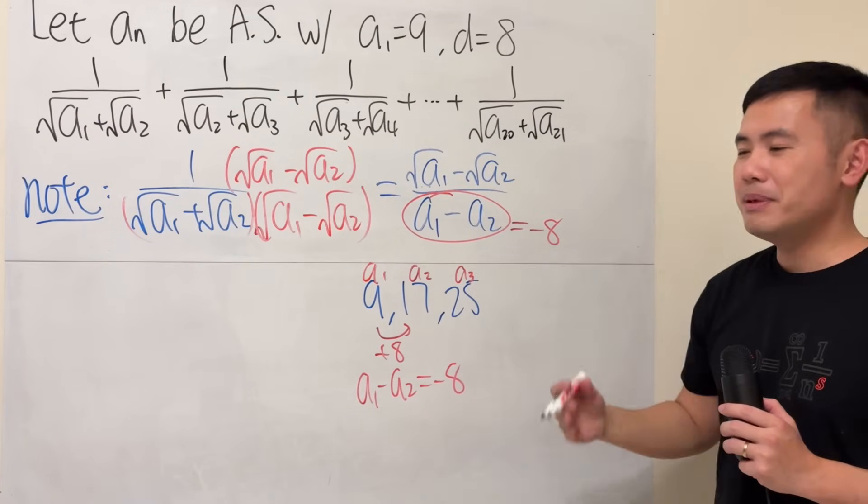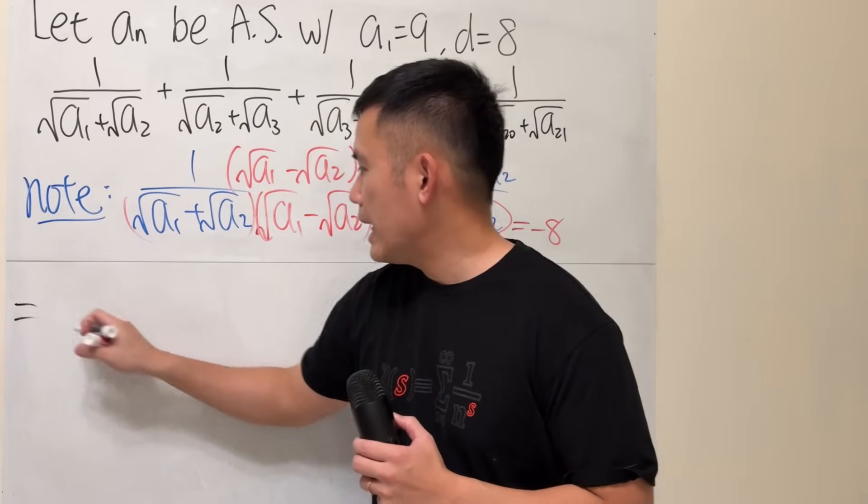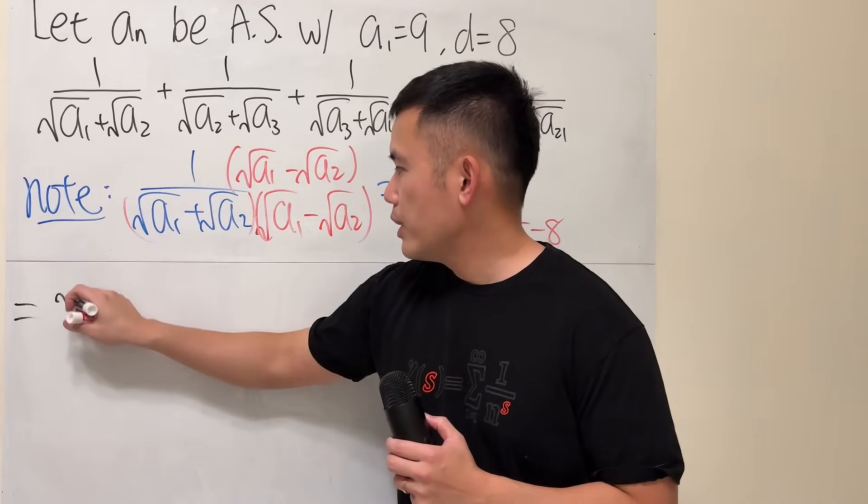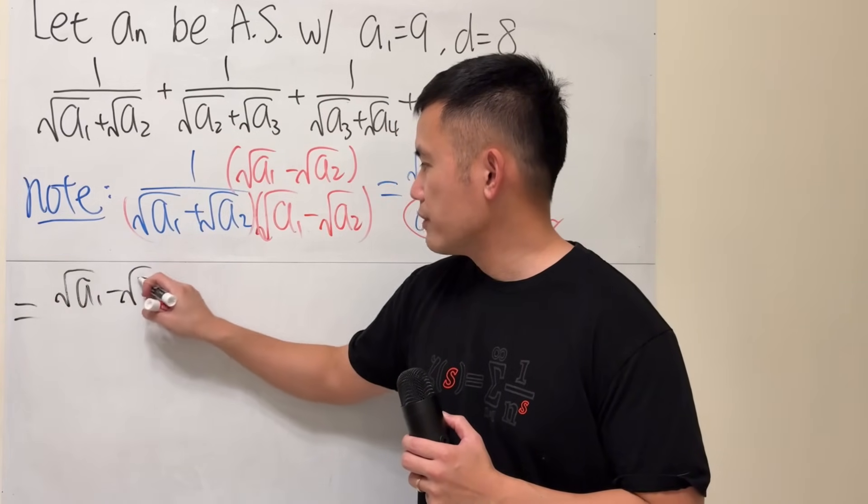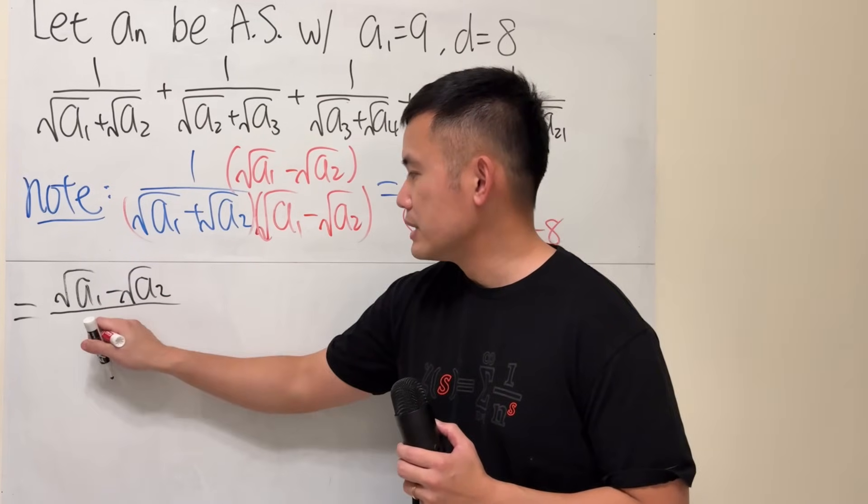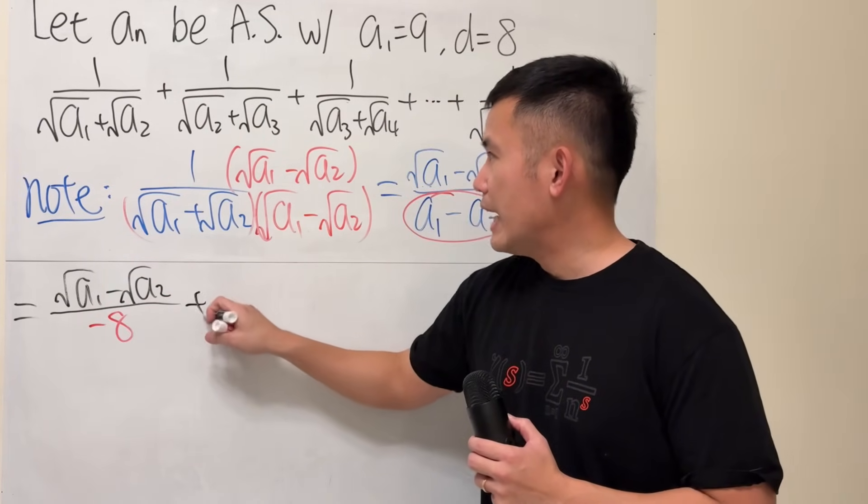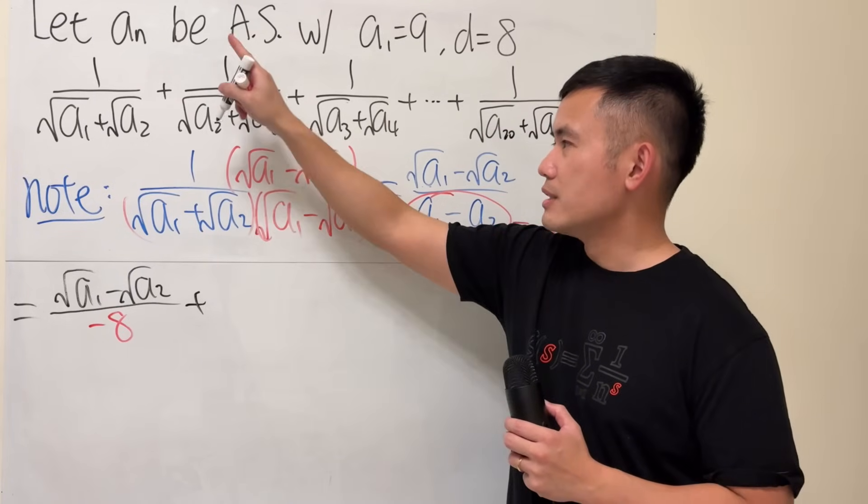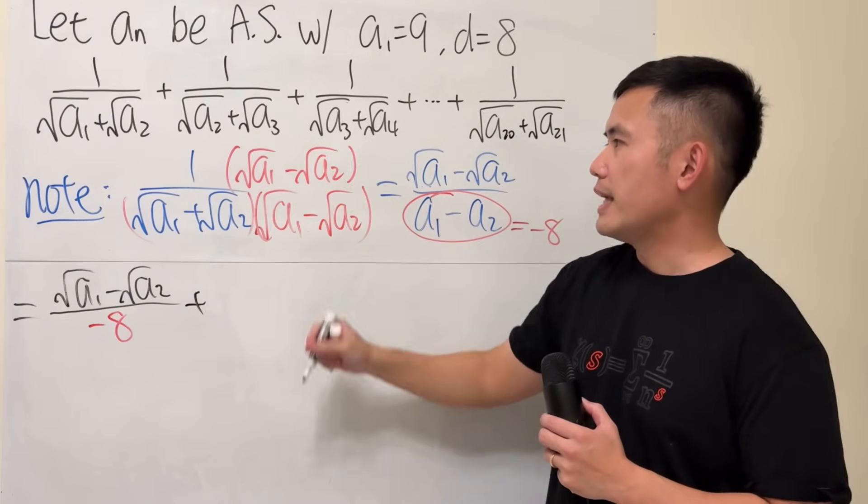So, for the first one, we will have that square root of a1 minus square root of a2 over negative common difference, which is negative 8. And then we add the next term. The conjugate is square root of a2 minus square root of a3.